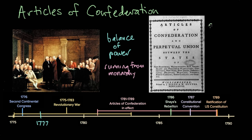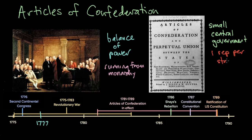They don't even have a judicial branch. Congress is made up of all 13 states, and every state had one representative. In order to change the Articles of Confederation, if they wanted to pass an amendment, they had to get unanimous consent from all 13 states.